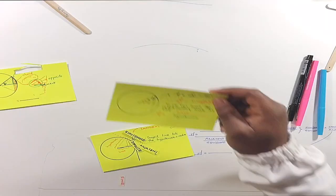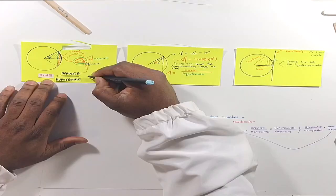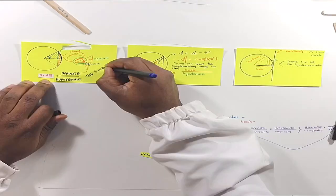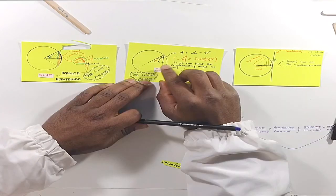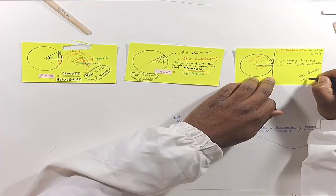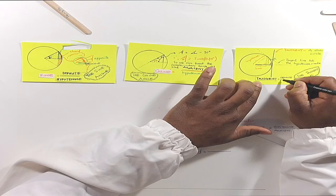And now, here are the three trigonometric ratios that we have. The sine of a triangle is equal to opposite divided by hypotenuse. The cosine of a triangle is equal to adjacent divided by hypotenuse. And the tangent of a triangle is equal to opposite divided by adjacent.